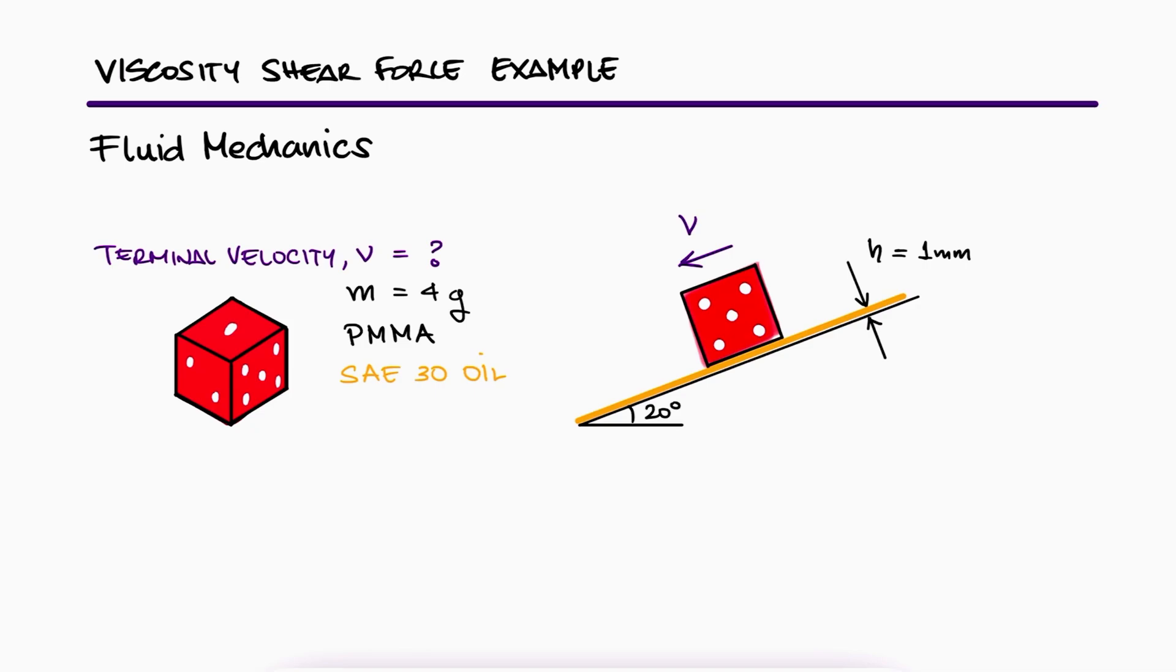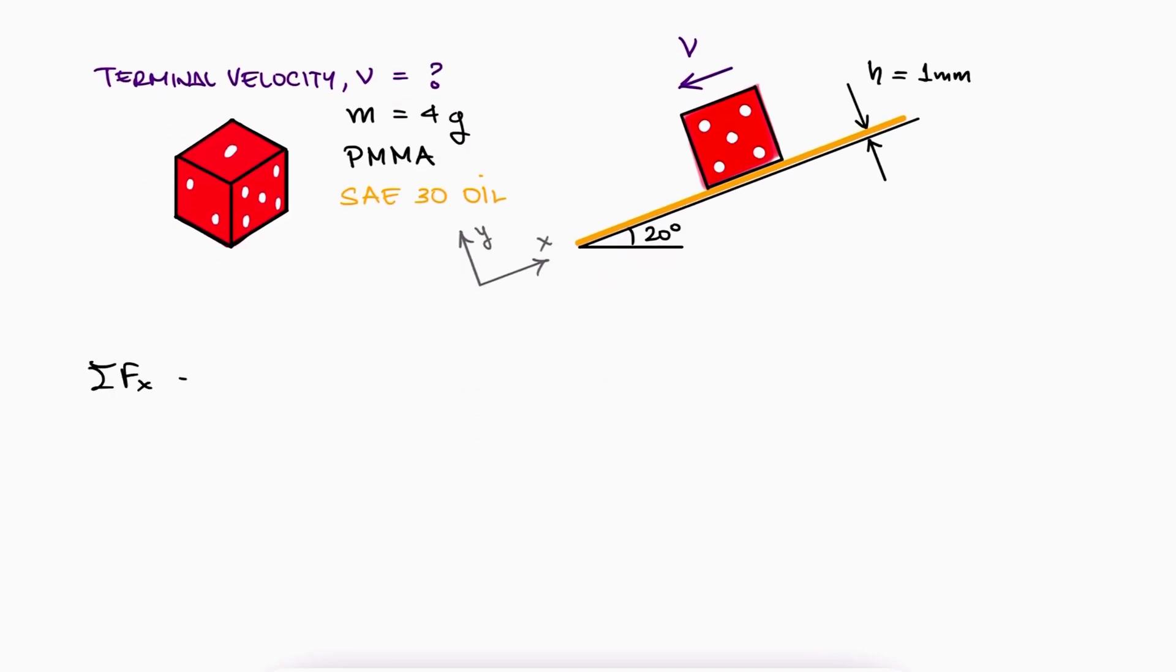To find the terminal velocity of the dice, meaning the velocity when it's no longer accelerating or decelerating, we'll write the sum of forces in the inclined direction first. We do this because if the velocity is constant, the acceleration in that direction is zero, and therefore the sum of forces is zero too.